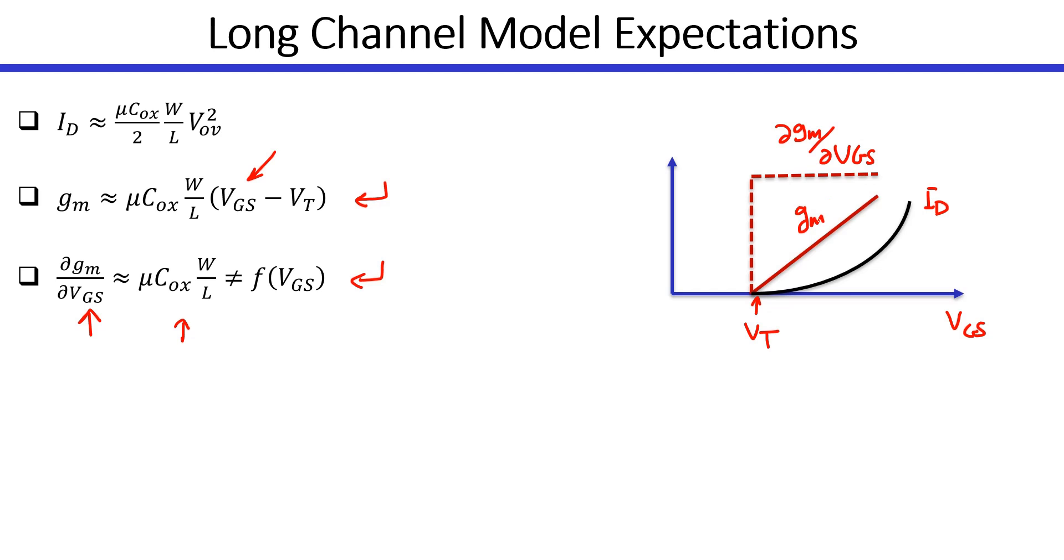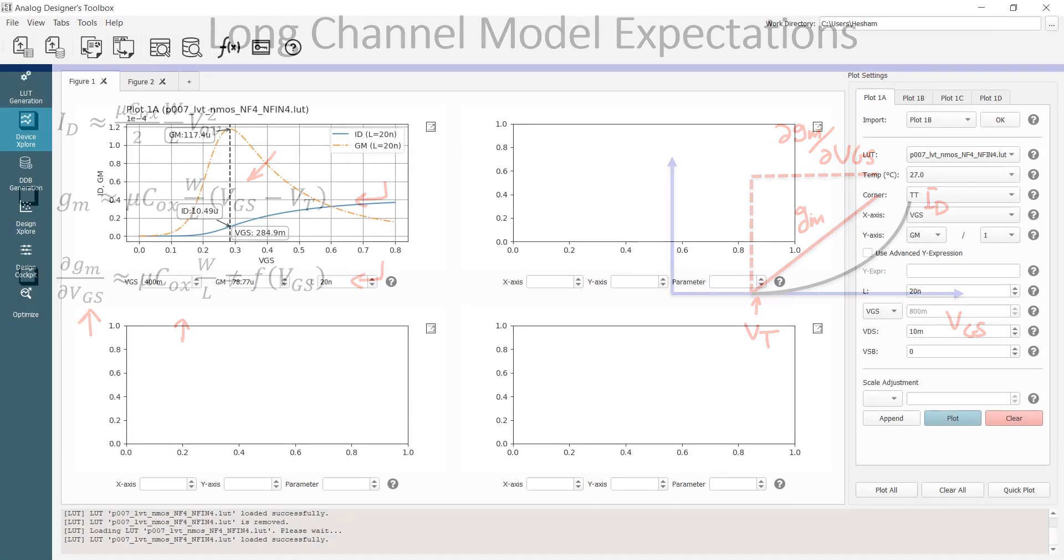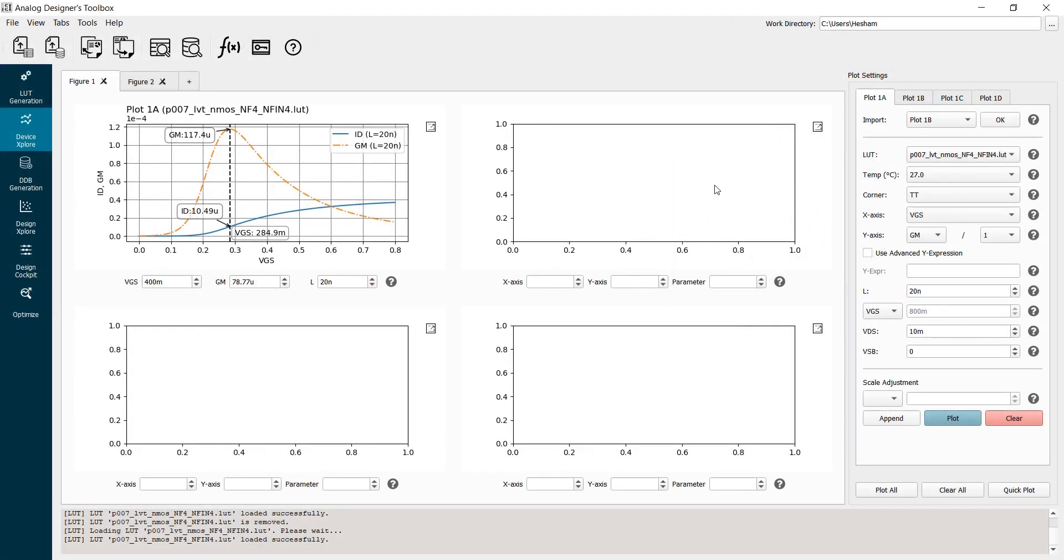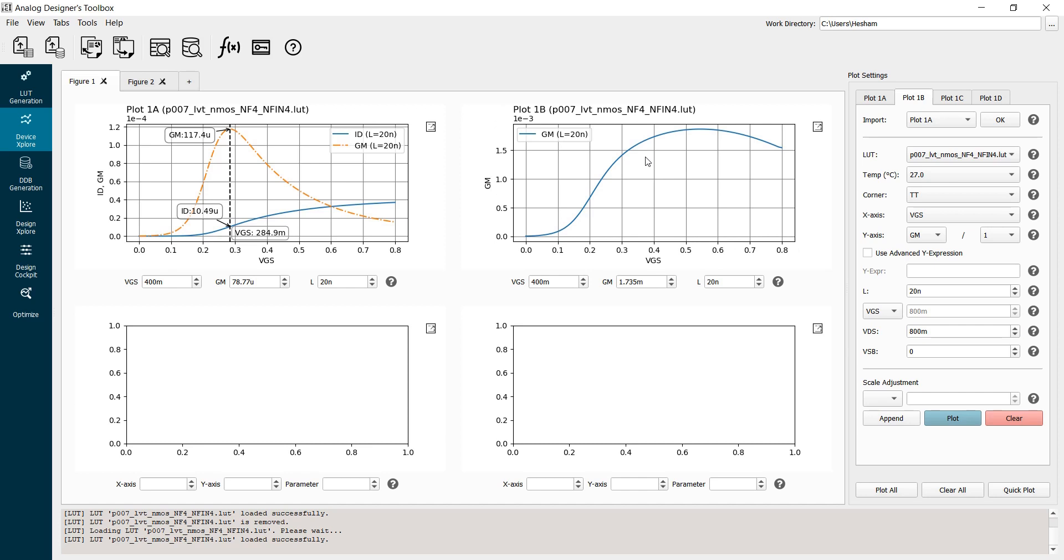So I'll go back to ADT. I will click here on plot 1B. This is plot 1B characteristics. I can import plot 1A characteristics here. As you can see, all the settings will be copied from plot 1A. I will change the VDS to 800 millivolts. And I will plot GM. So this is my GM.